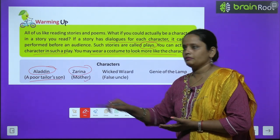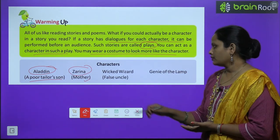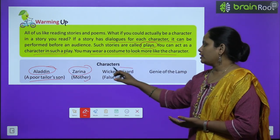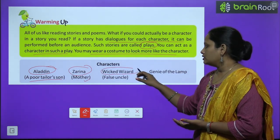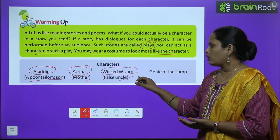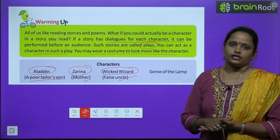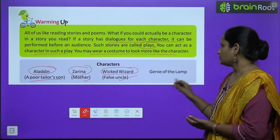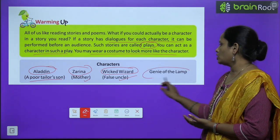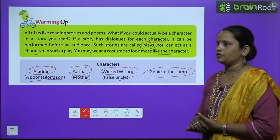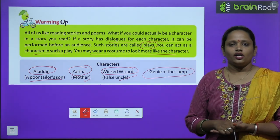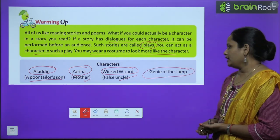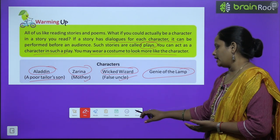The characters in this story are: Aladdin ki mother (Aladdin's mother), Wicked Vizier — ek false uncle (a false uncle), and the Genie of the lamp. So this story is about these four characters.